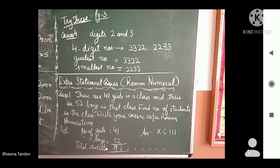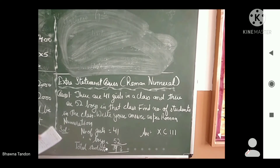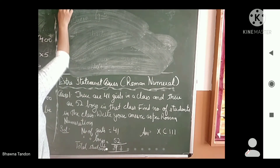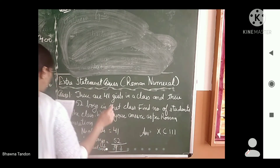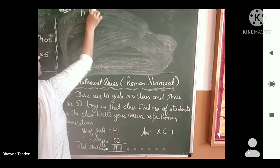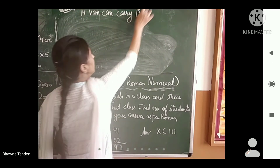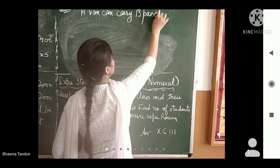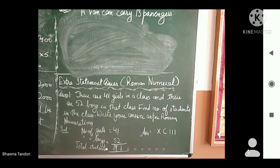Next is the second question, again based on Roman numerals. I am going to write the statement first. Question number 2: A van can carry 13 passengers. How many passengers can be carried in six such vans?